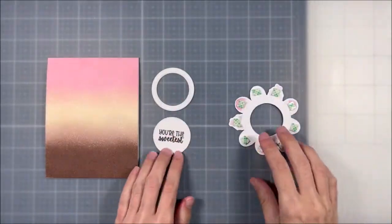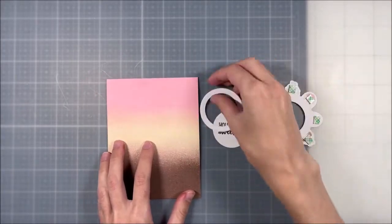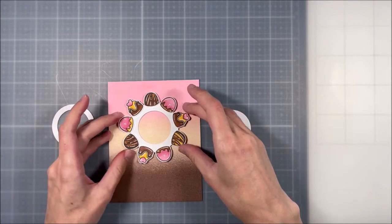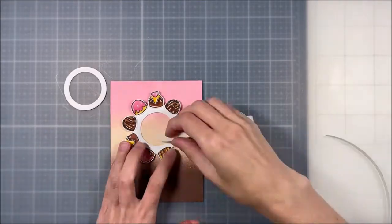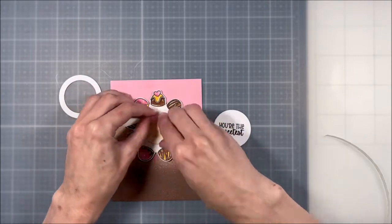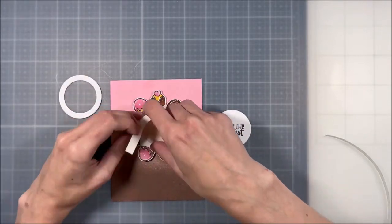I also like to go in and add some foam tape behind my stamped images just to give them a little bit of lift off the cardstock so the recipient can actually spin the mechanism. So now you can either take your ring piece or the piece that the cupcakes are sitting on and you're going to want to circle your foam tape around in that.